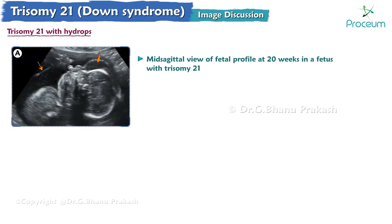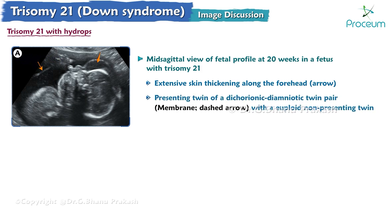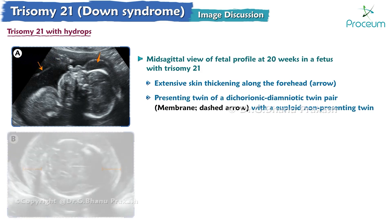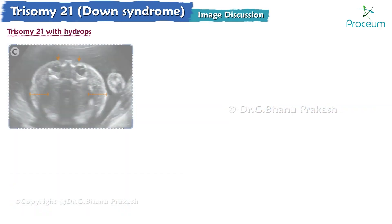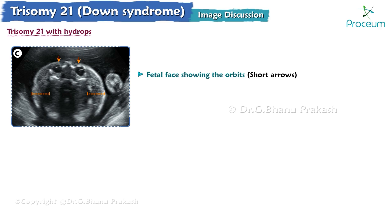Here is an image of Trisomy 21 with hydrops. Image A shows a mid-sagittal view of the fetal profile at 20 weeks, showing extensive skin thickening along the forehead. This fetus was the presenting twin of a dichorionic-diamniotic twin pair with a euploid non-presenting twin. Image B is an axial scan through the fetal head showing extreme skin thickening circumferentially around the cranium. Image C shows a view through the fetal face showing the orbits and extreme skin thickening around the lateral aspect of the fetal face.